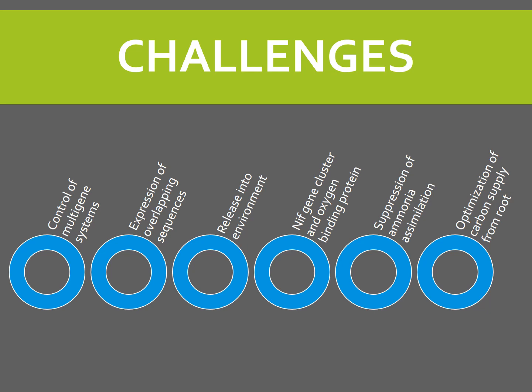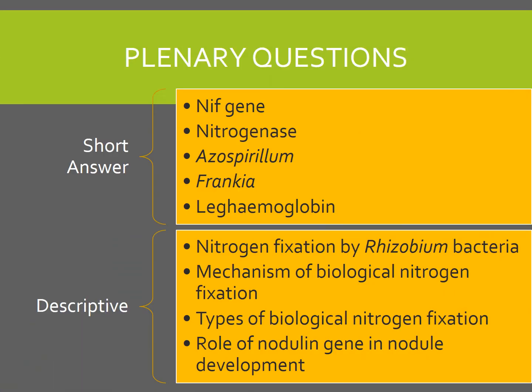With that, we have come to the end of the unit on biological nitrogen fixation. Let us quickly review some questions with regard to this. These are some questions that can be asked in your exam or that you can use to revise your understanding of the topic. For short answer two-mark questions, they have asked about NIF gene or nitrogenase, the structure of nitrogenase, organisms like Azospirillum, Frankia, or Azotobacter that show nitrogen fixation, or the important protein component leghemoglobin.